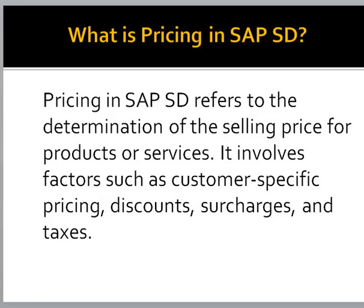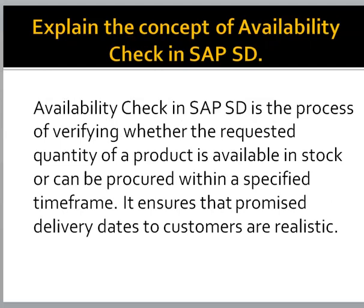Explain the concept of availability check in SAP SD. Availability check in SAP SD is the process of verifying whether the requested quantity of a product is available in stock or can be procured within a specified time frame. It ensures that the promised delivery dates to customers are realistic.